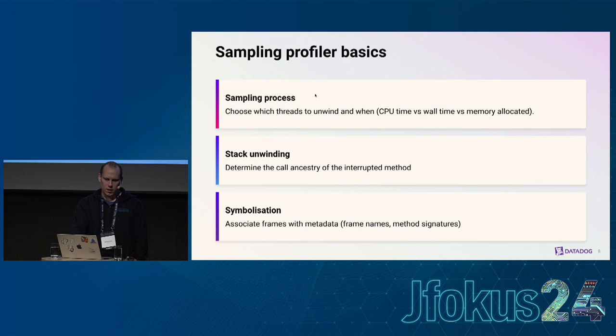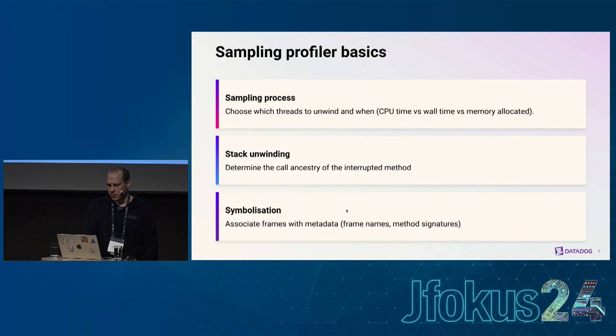In a sampling profiler, we have a sampling process that decides when to take stack traces. That can be triggered by CPU time in a CPU profile, wall time, or memory allocated in an allocation profiler. We need to be able to unwind stacks and symbolize the stack traces we get, which basically means mapping them to metadata like frame names and method signatures.